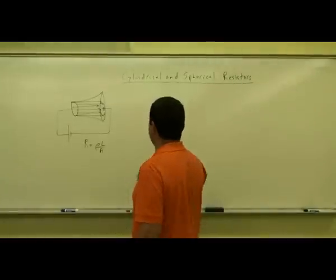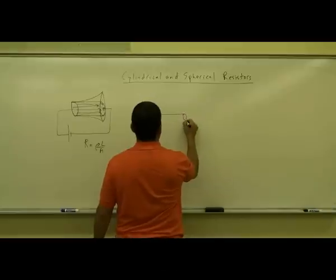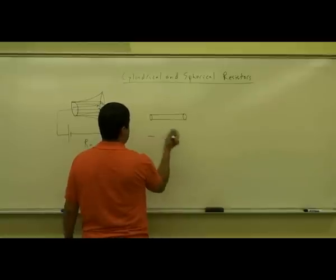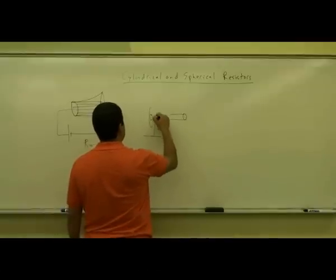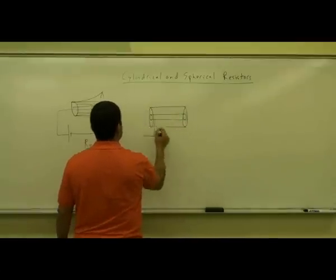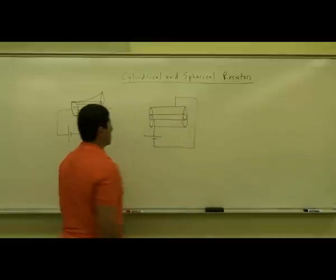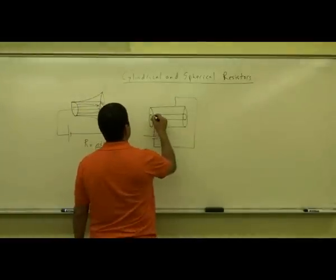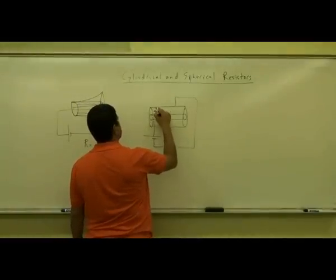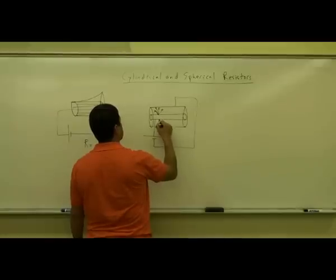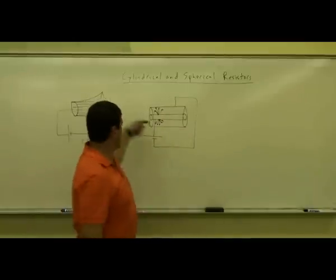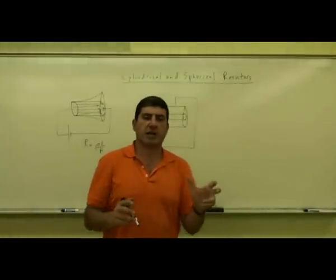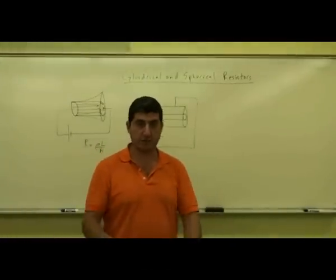Now I'd like to consider a different kind of resistor. What if we have an inner wire connected to the positive of the battery, and an outer wire connected to the negative? In this case, the current flows cylindrically outward from the inner wire. So instead of flowing from one end to the other, the potential difference is between one cylinder and the other — similar to cylindrical capacitors.